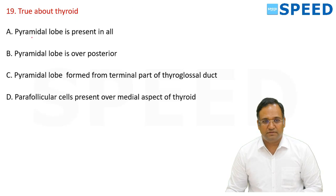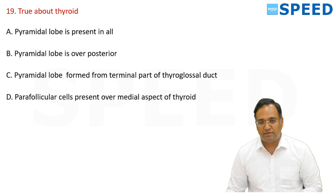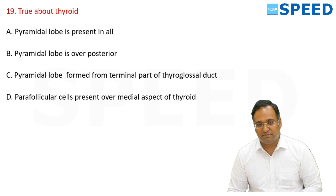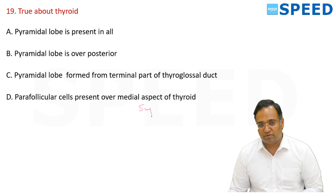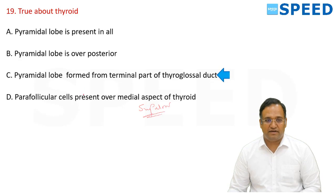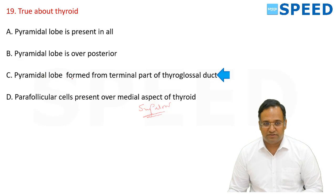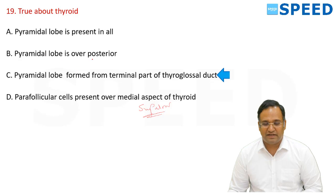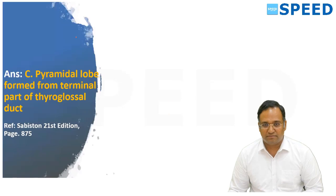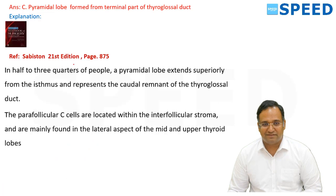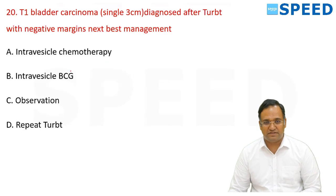True about the thyroid: the pyramidal lobe is formed by the terminal part of the thyroglossal duct. Parafollicular cells (C cells) are present at the superior aspect — the superior pole — not the medial aspect. This is why medullary thyroid cancers are more commonly seen in the superior pole. The pyramidal lobe is anterior and midline, not posterior, and is not always present. Reference: Sabiston 21st edition, page 875.